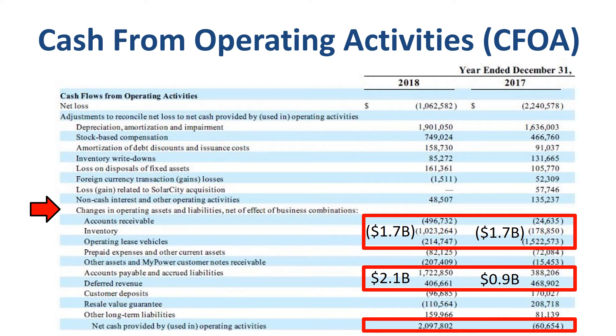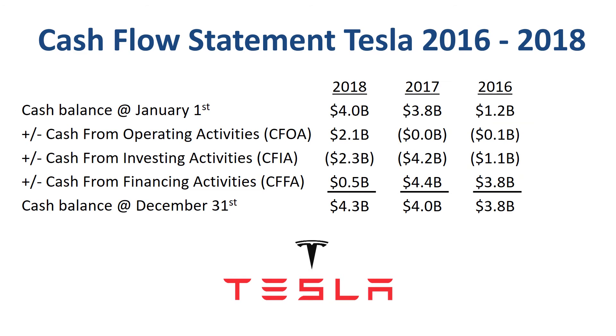In summary, reducing the net loss and managing working capital have been the main drivers for Tesla's cash from operating activities performance in 2018.